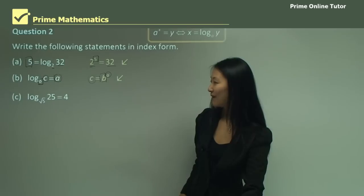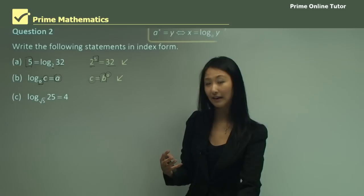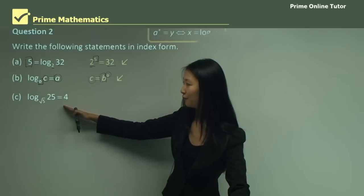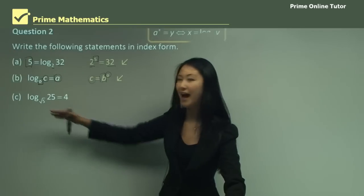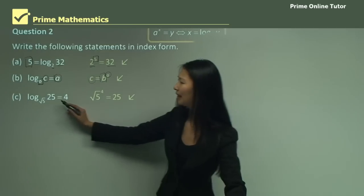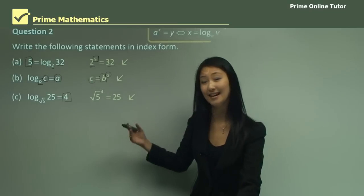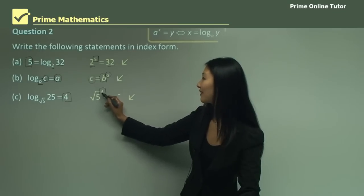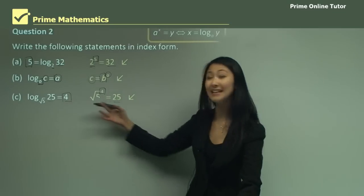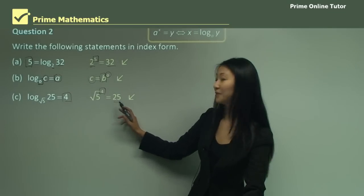In part c, we have log base square root 5, 25 equals 4. It may look complicated, but we use the same principles. Square root 5 is the base of the logarithm, so it becomes the base of the index. Since the logarithm equals 4, that 4 becomes the index. Finally, 25 moves over, giving us square root 5 to the power of 4 equals 25.